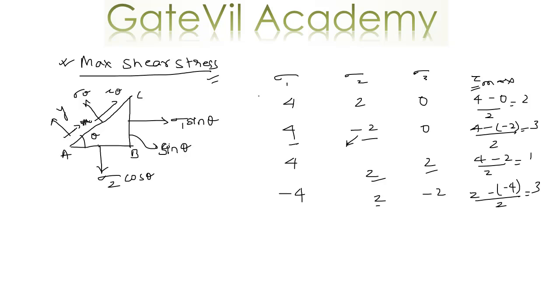So this is how you calculate tau max — you have to take the algebraically maximum and minimum values, take the difference, and then divide it by 2. This is it for now, and we'll meet in the next class. Till then, bye bye.